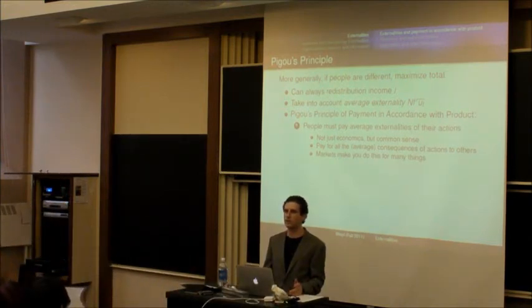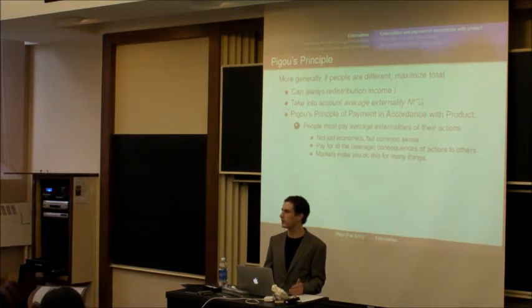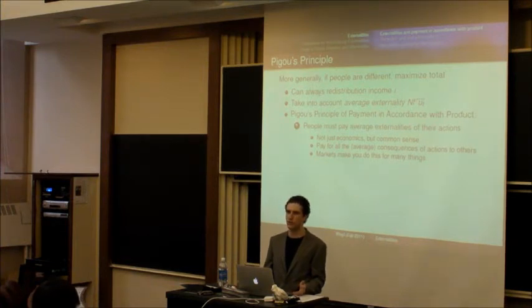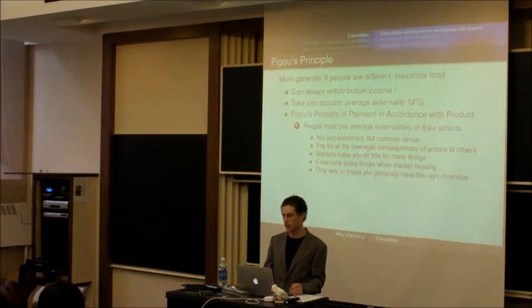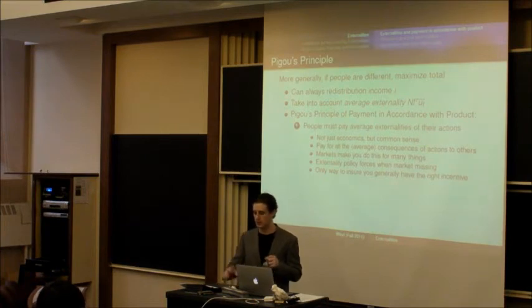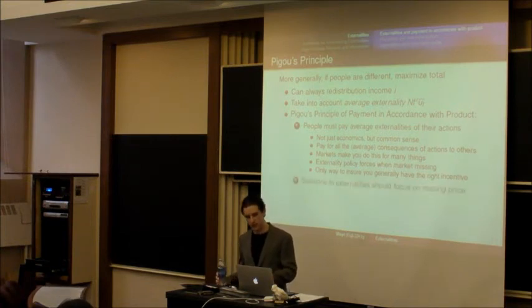This is sort of like the most basic ideas of justice that people have. And in effect, this is what markets make you do for many things in life, right? So when you want to have an extra pizza, you have to pay for the cost of society providing you that pizza. When you want to have a new car, you have to pay for the cost of the company for manufacturing that cost. But when you drive a car and you warm up the planet, you don't have to pay for the consequences that it has for other people, the cost that it imposes on that. And externality policy tries to get you to pay for those things. So this is basically the only way to consistently ensure that people have the right incentives to take the right actions.